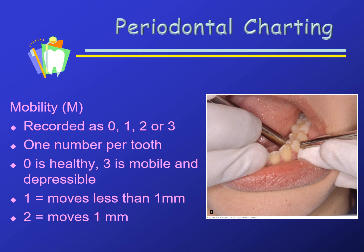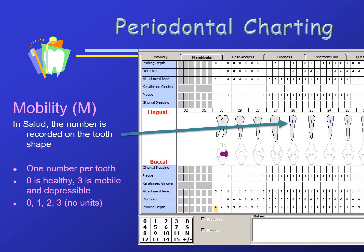Mobility is recorded as 0, 1, 2, or 3. Zero is healthy with no detectable movement; 3 is the least healthy, used when the tooth moves buccolingually and is depressible in the socket. We use two metal instruments to check for mobility — using your fingers leads to false positives. The mobility score is recorded on the picture of the tooth; click the tooth and a text field will be available.